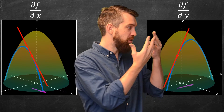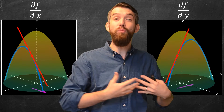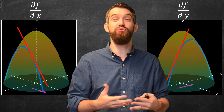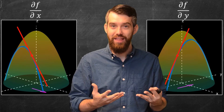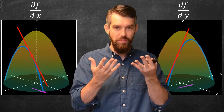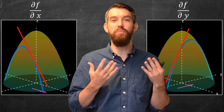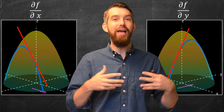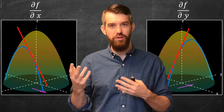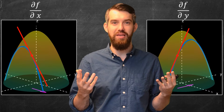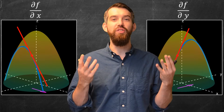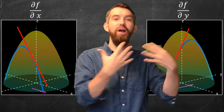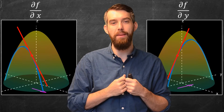Likewise for the partial derivative with respect to y, we plug in x equal to x₀ everywhere. We restrict ourselves to a path, and along that path it has a particular slope — that is the partial derivative with respect to y. Geometrically, a partial derivative with respect to x or y is the slope in a particular direction, either parallel to x or parallel to y.